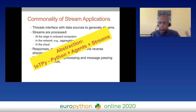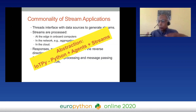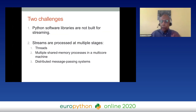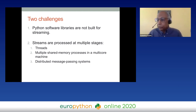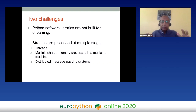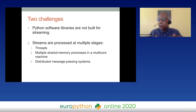We hope this abstraction blends with the way you program — with Pythonistic programming. We have two problems to solve to get a package that everybody can use. First, Python's libraries weren't written for streams. Second, streams are processed using different types of concurrency — threads, shared memory, message passing — and the package for everybody should offer a unifying approach.